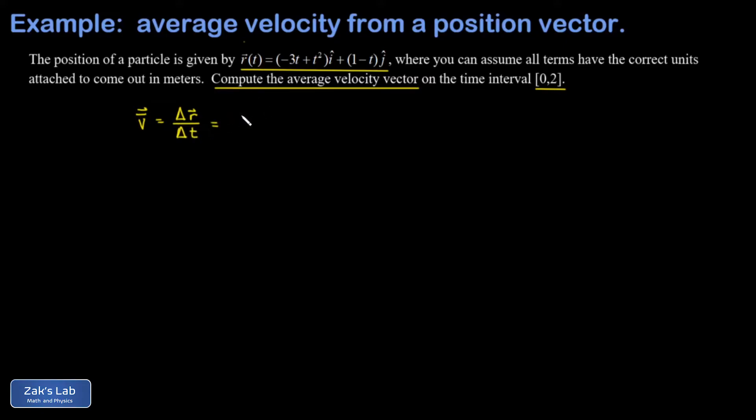So we write the change in position as the final position minus the initial. So that's r of 2 minus r of 0, all divided by 2 minus 0. That's the width of the time interval, 2 seconds.